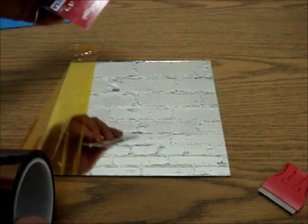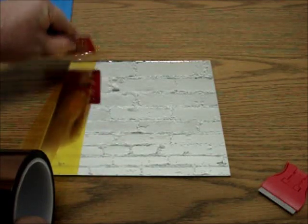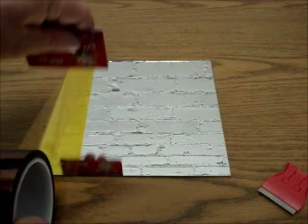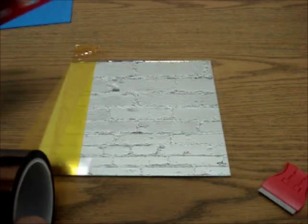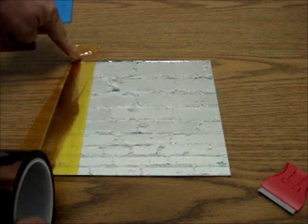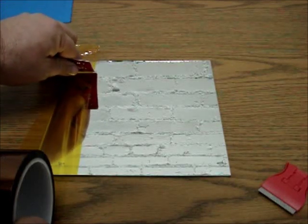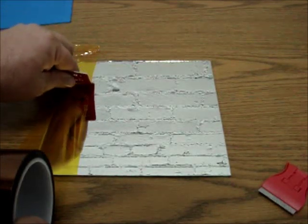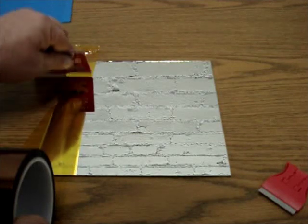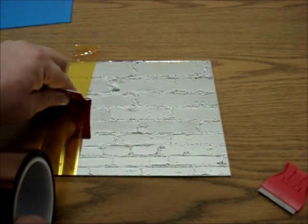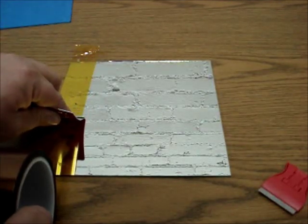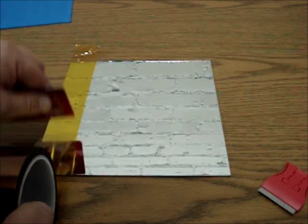We're going to walk this back and squeegee it as we're laying it down. We've got this pretty firmly attached to the table, so now we're going to squeegee this. You don't want to go super fast with this because you'll kind of ruin it, but you don't want to go super slow either.